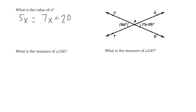Now we're going to get x on one side — all of our x terms on one side and all of our constants on one side. If I take this 7x, which is positive, and move it to the other side, that would be negative 7x.